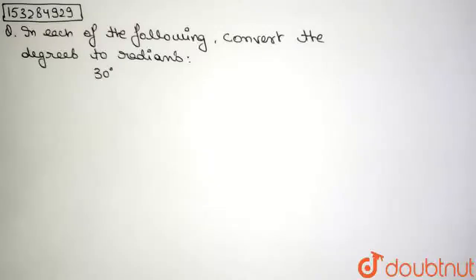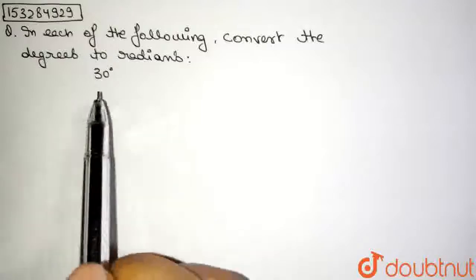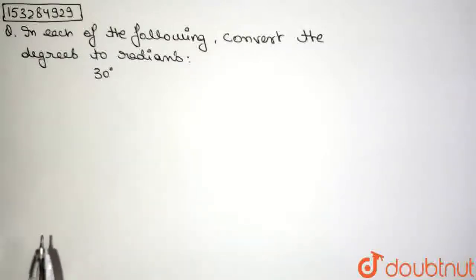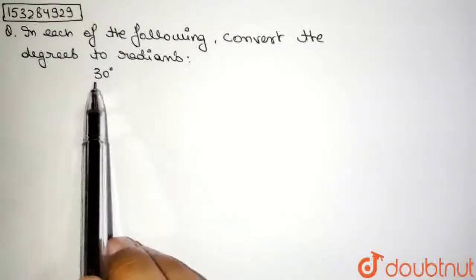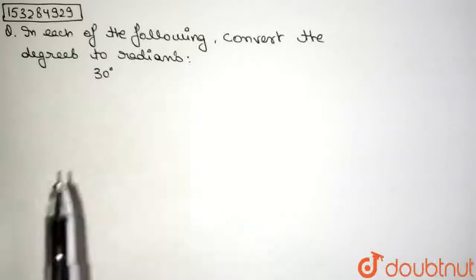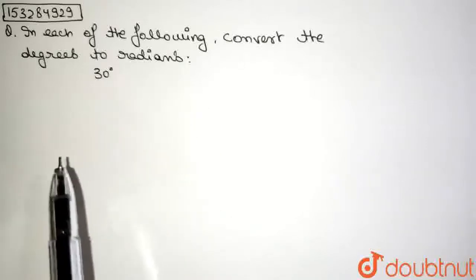Hello friends, welcome. Today we are solving a math question which states: In each of the following, convert the degrees to radians. And here we have the angle as 30 degrees in this case. So, how do we convert 30 degrees to an angle in radians? Let us look at this question.